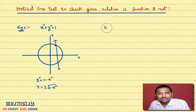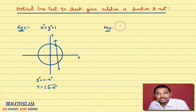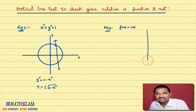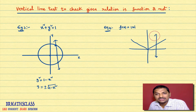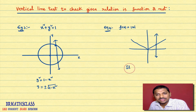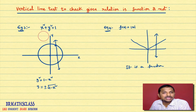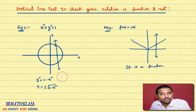Example 4: f(x) = |x|, the modulus function. If you draw the graph of |x|, it looks like a V-shape. You draw one vertical line to it — it cuts the graph at only one point. So it is a function. In the third example (the circle), the vertical line cut the graph at two points, so it is not a function.